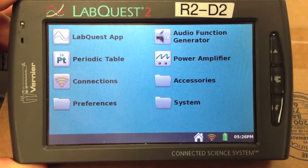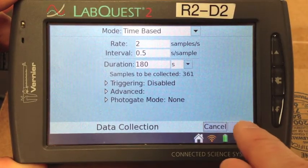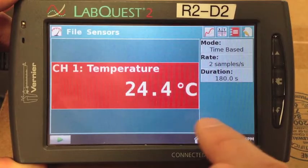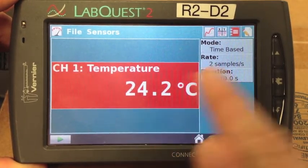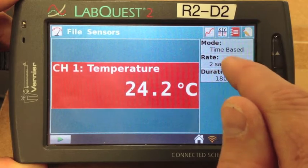Let's go set up our LabQuest to collect data then. Go to the LabQuest app. Make sure you're on the meter mode. There's the meter tab. Mode should be time-based.